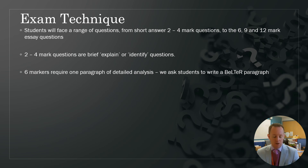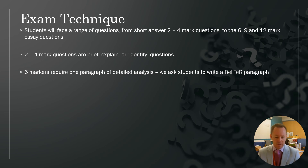The six-mark question is the first of the essay-style questions GCSE students have to answer. These require one paragraph of detailed analysis. We ask students to use a BELTER structure, which we use through GCSE and right through to A-level in Business Studies. A six-mark answer is basically one paragraph that is a detailed chain of reasoning.